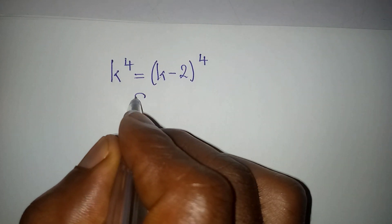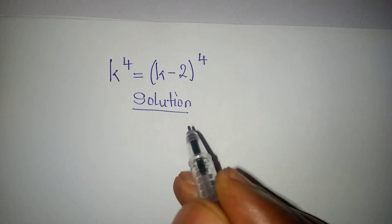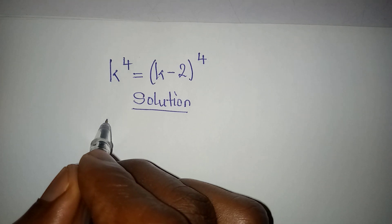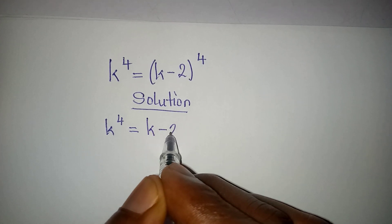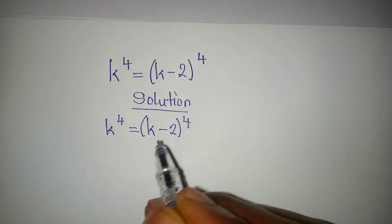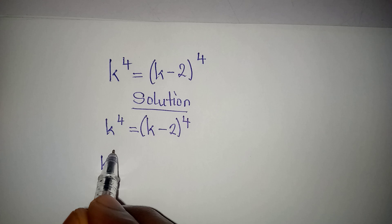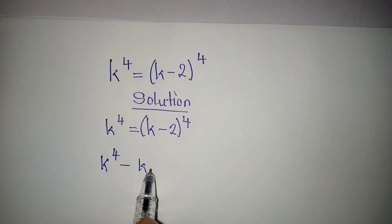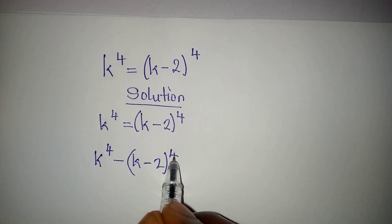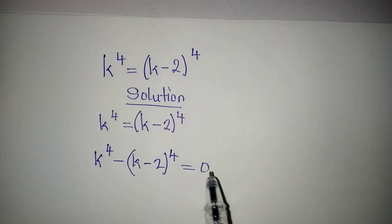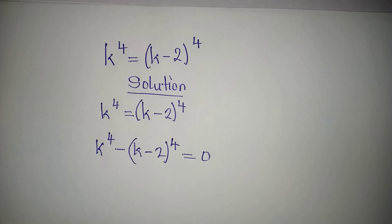Let's provide the solution to this problem. We have k to the power of 4 equal to k minus 2 to the power of 4. The first step is to take everything to the left: k to the power of 4 minus (k minus 2) to the power of 4, in brackets, being equal to zero.